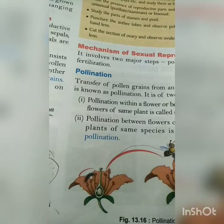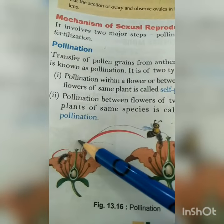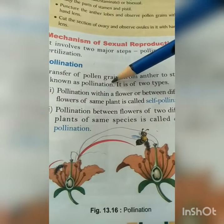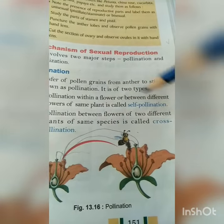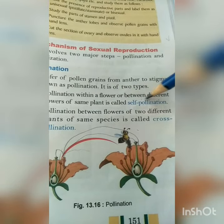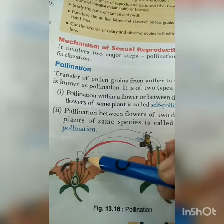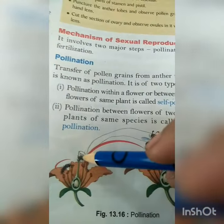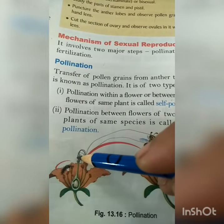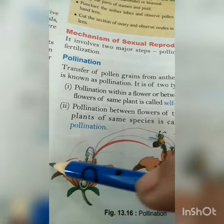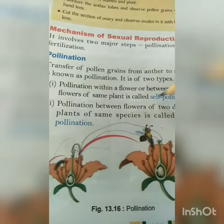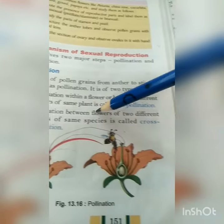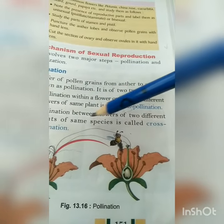The anther transfers pollen to the stigma. Pollination within a flower or between different flowers of the same plant is called self-pollination. If pollen goes to the stigma of the same flower or plant, it is self-pollination.